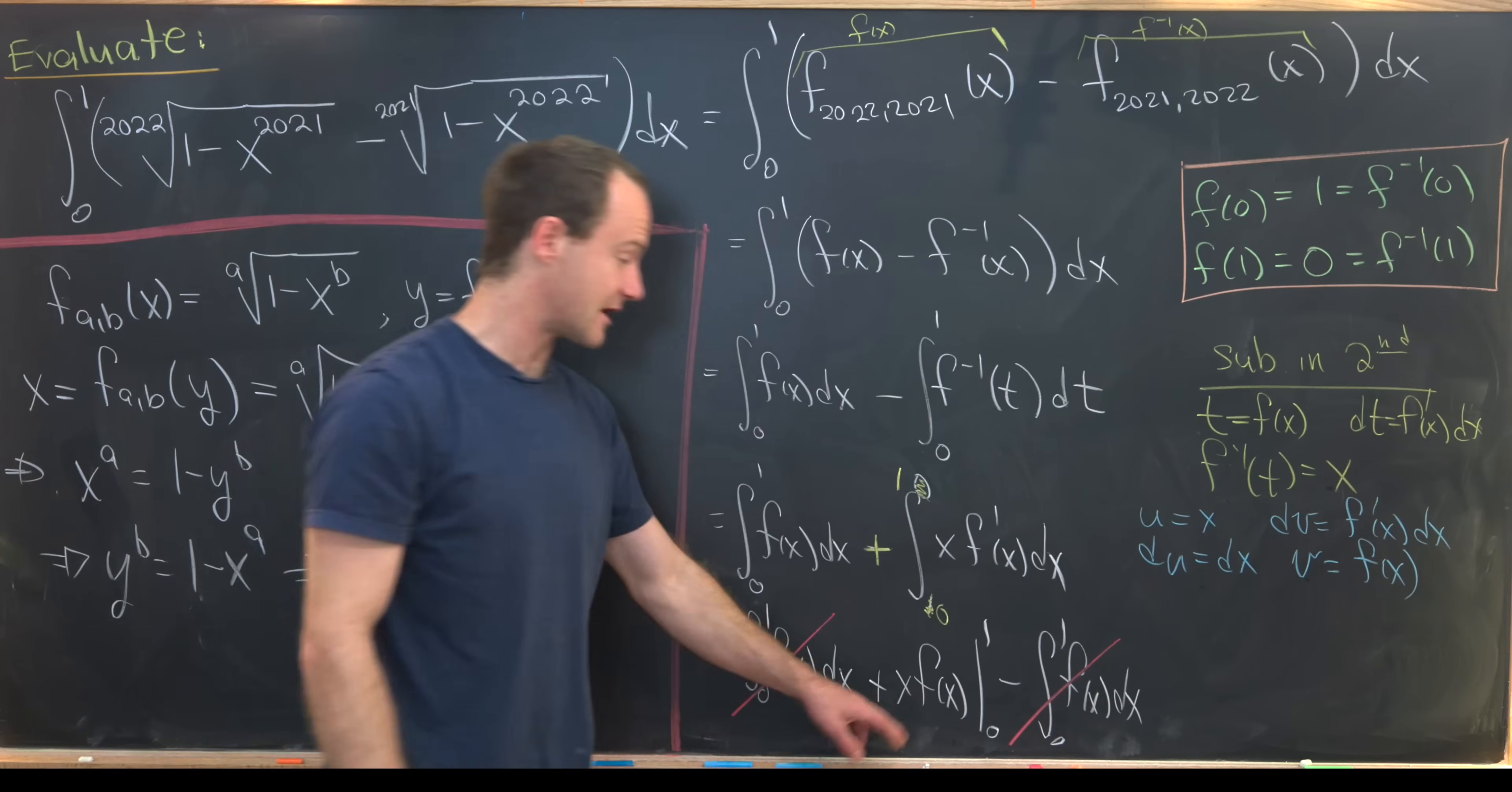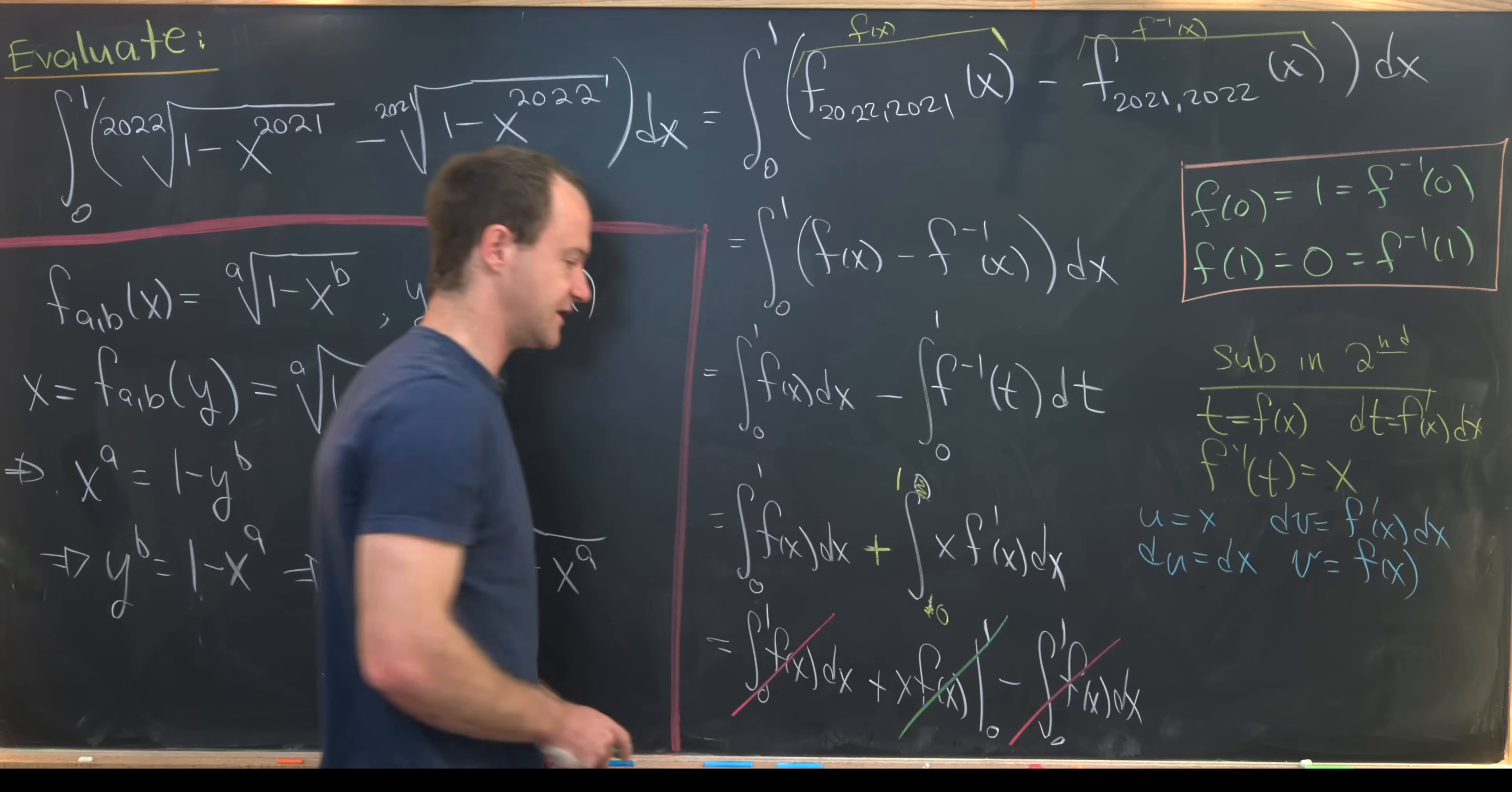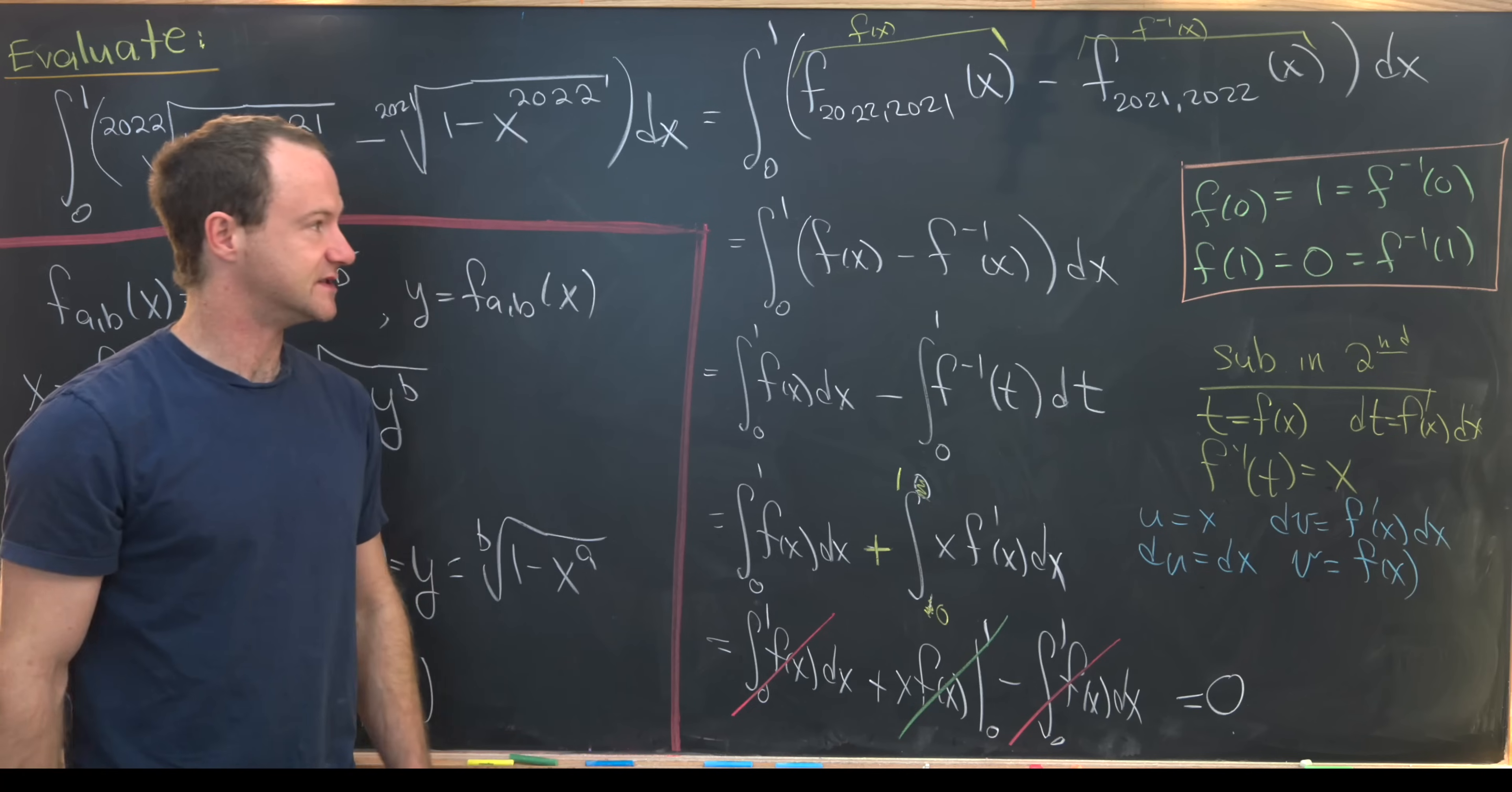And then this guy right here also zeros out because f of 1 is 0 and x evaluated at 0 is also 0. So that cancels out. But that's all of the parts canceling out, which means our final answer is 0.